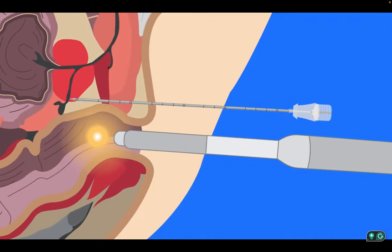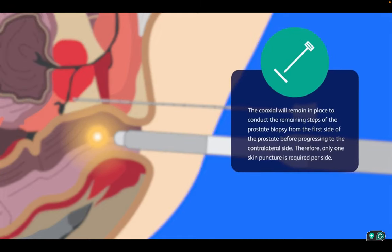Once the coaxial is placed at the apex of the prostate, a syringe is attached to administer further local anesthesia at the apical junction and then removed. The coaxial will remain in place to conduct the remaining steps of the prostate biopsy from the first side of the prostate before progressing to the contralateral side. Therefore, only one skin puncture is required per side.